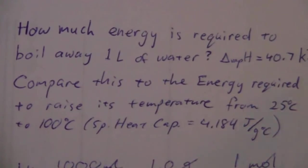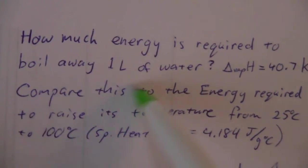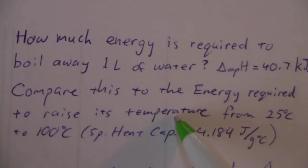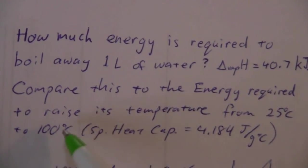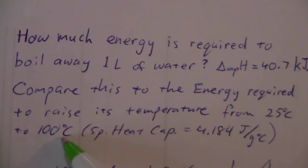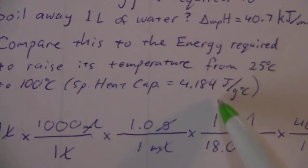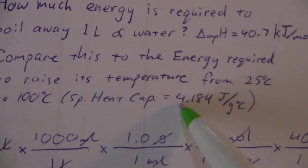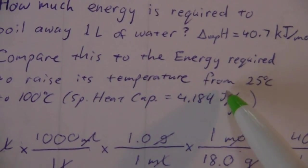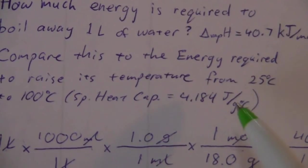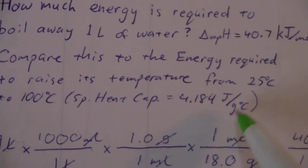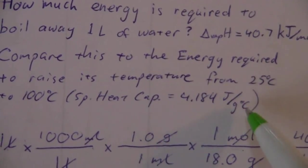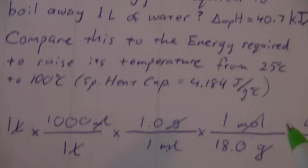So let's look back at the other part. Let's compare this to the amount of energy that's required to raise its temperature from 25 to 100 degrees. So now, in order to do this part, again, look at these units. This is telling us 4.184 joules are required for every gram of water to raise its temperature 1 degree. For every gram, for every degree.